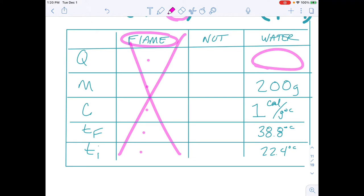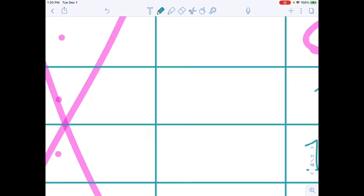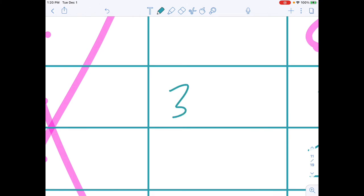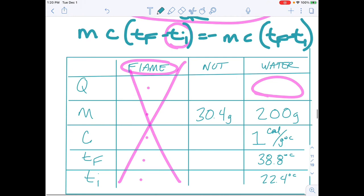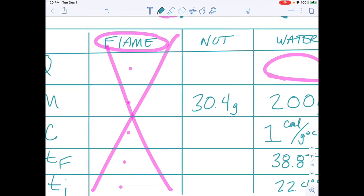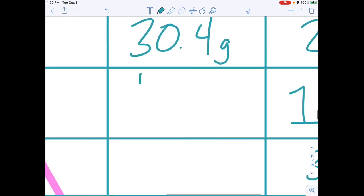Now we couldn't at this point solve for Q of water. That doesn't do us a whole lot of good. That's not what we're looking for. So what we're going to do is we're going to see what information we have on the metal, on that hex nut that was there. Well, a couple of things. I went and found the mass. The mass of that was 30.4 grams and it's made of iron. It's probably a zinc coated steel. We're going to call it iron. The specific heat of iron is 0.11 calories per gram degree Celsius.